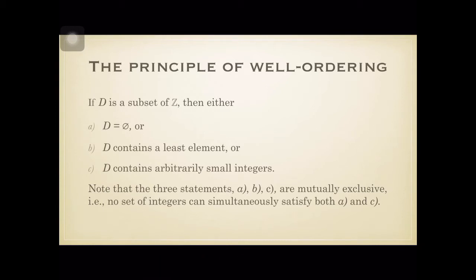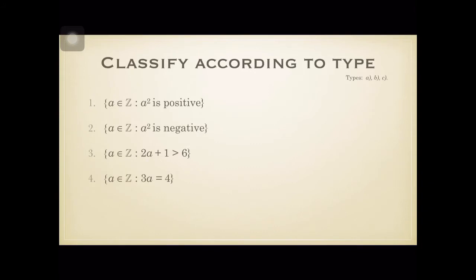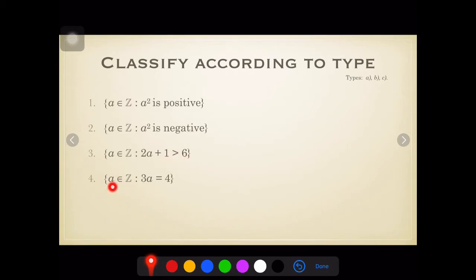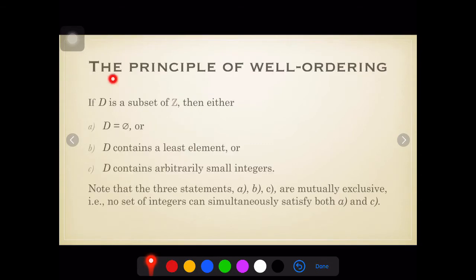Let's picture this out more with these four examples. Item number one contains integers such that the square of that integer is positive. Set two has integers such that A squared is negative. Item three has integers such that 2A plus 1 is greater than 6. And lastly, item four has all integers such that 3A equals 4. Note that the well-ordering principle or WOP is only valid for the set of integers or subsets of integers.